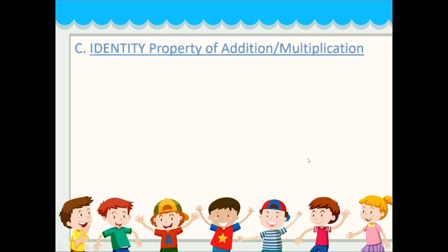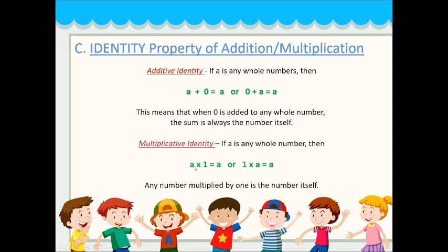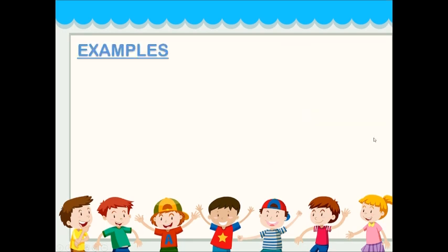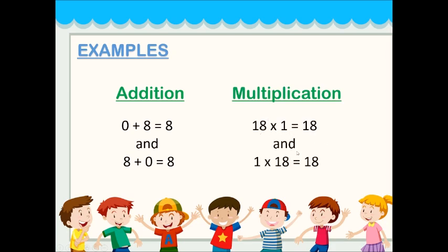Next is the identity property of addition or multiplication. First, the additive identity: if A is any whole number, then A plus 0 equals A, or 0 plus A equals A — when 0 is added to any whole number, the sum is always the number itself. Multiplicative identity: A times 1 equals A, or 1 times A equals A — any number multiplied by 1 is the number itself. Example: 0 plus 8 equals 8; 8 plus 0 equals 8. In multiplication: 18 times 1 equals 18; 1 times 18 equals 18.